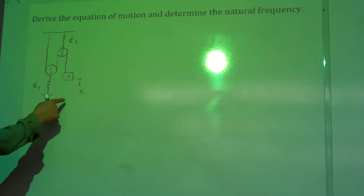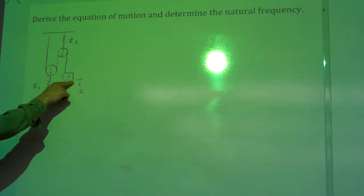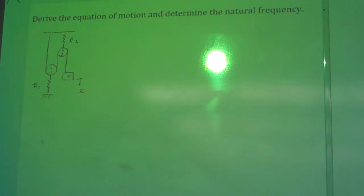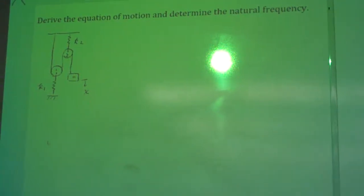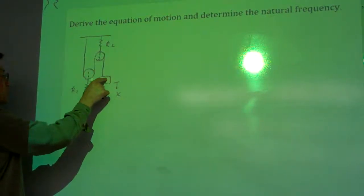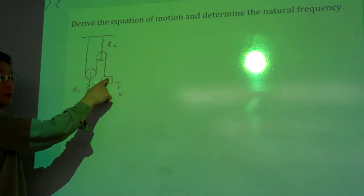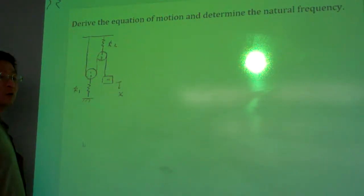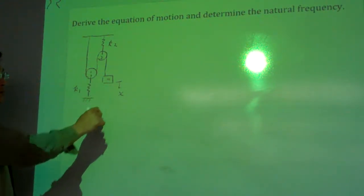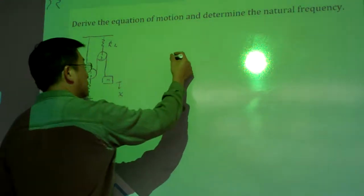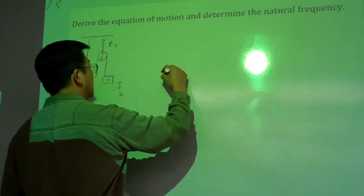For this case, I assigned the degree of freedom to be the displacement of this mass block and we want to formulate the equation of the motions and then also determine the natural frequencies here. To derive the equation of motion, we start with drawing the free body diagrams. For here, I'd like to have three free body diagrams be drawn in a way to help us understand the relation between the pulley's displacement to the degree of freedom. So here, this draws the first free body diagram.